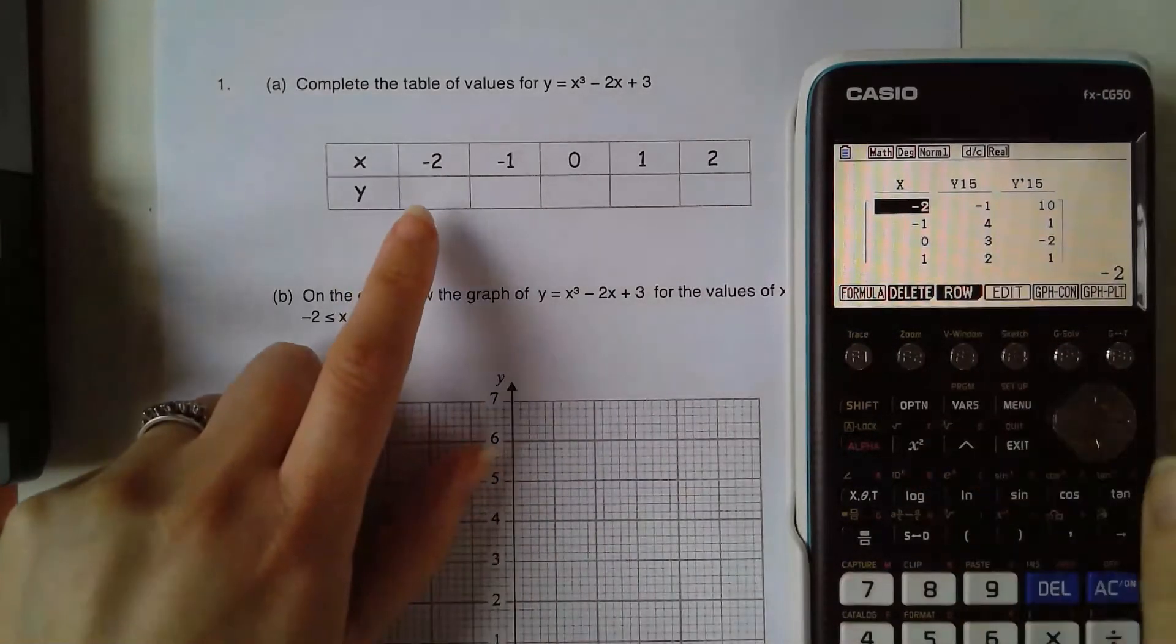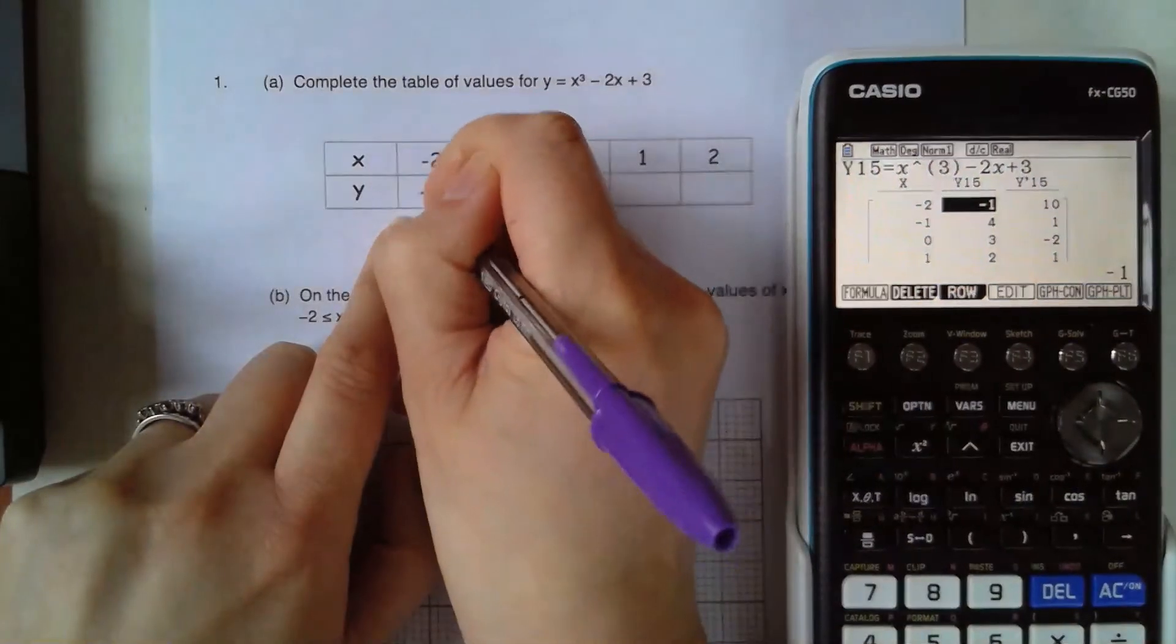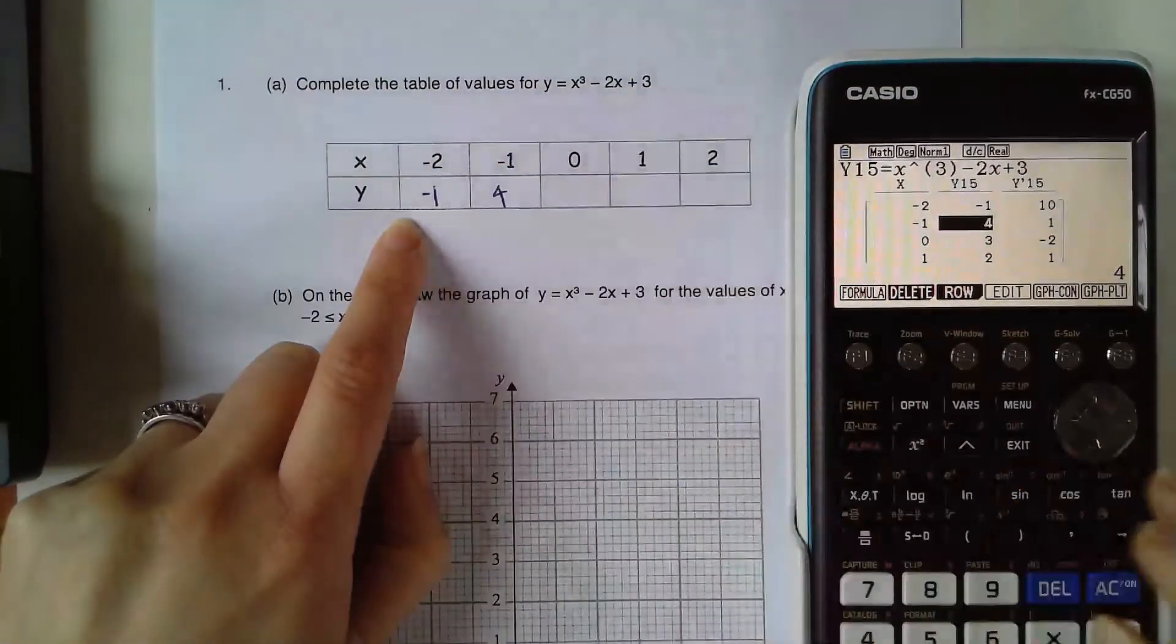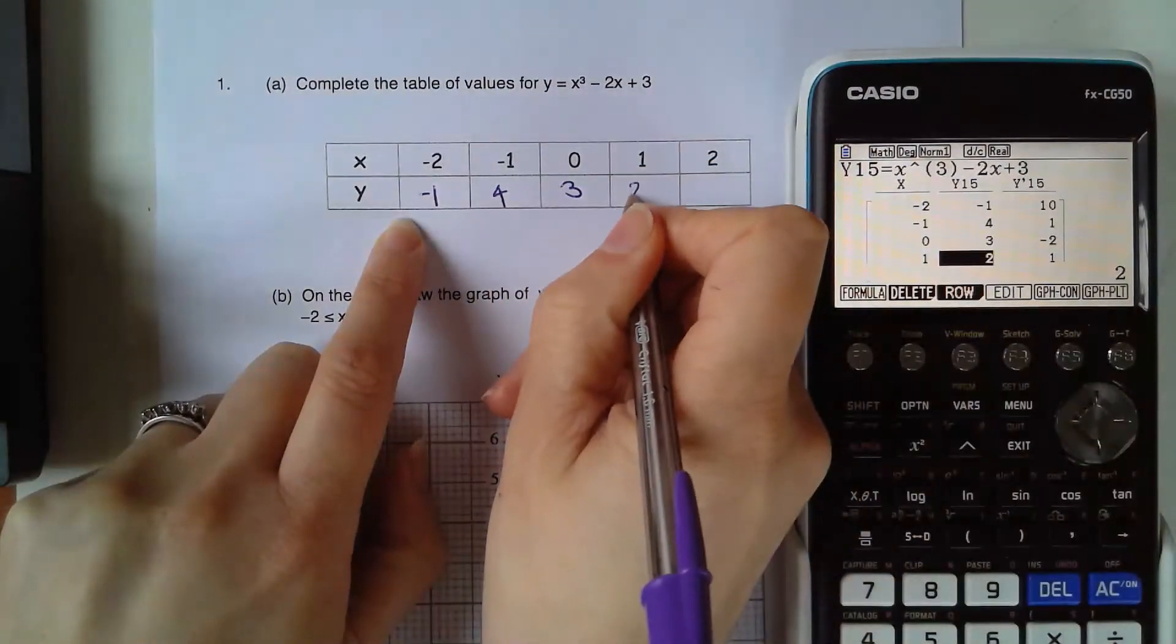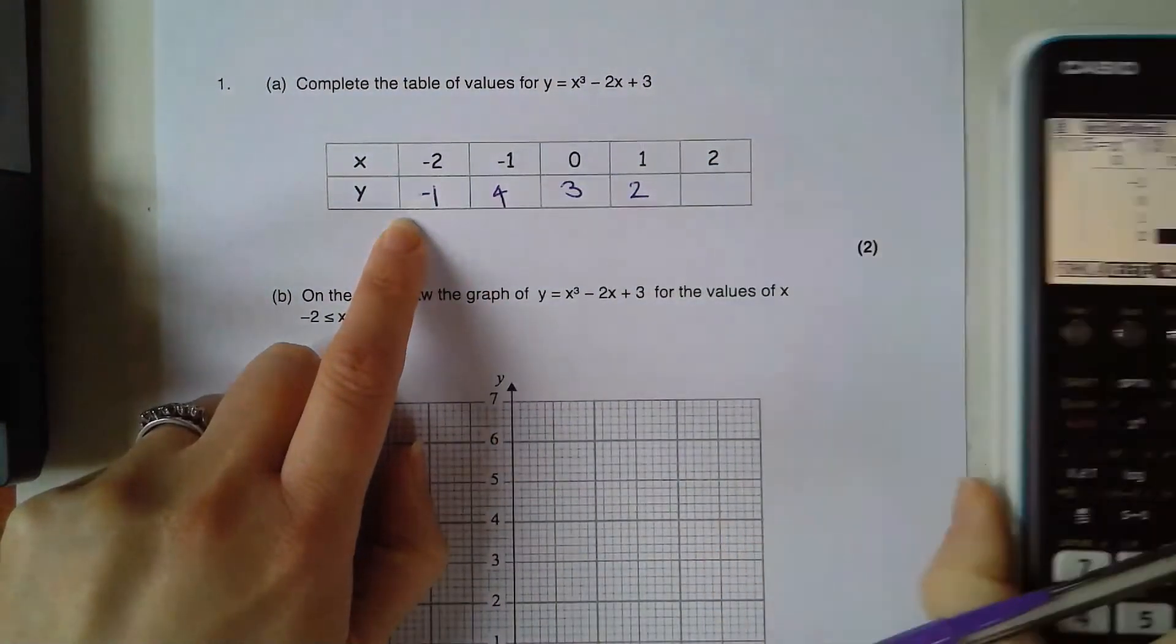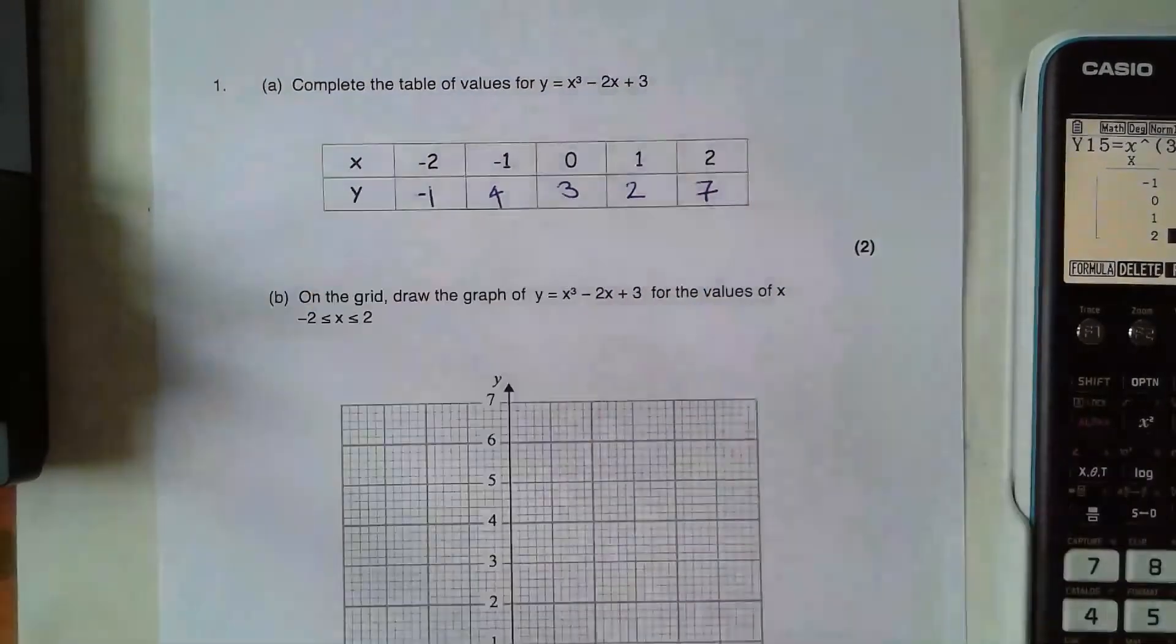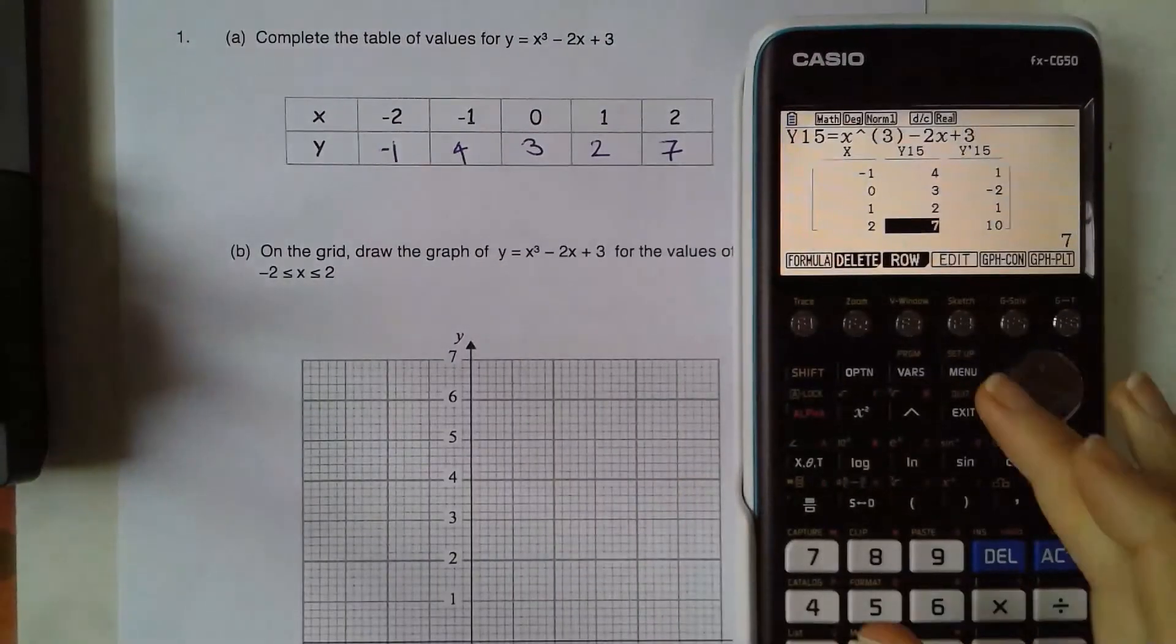So when x is negative 2, y is negative 1. Negative 1 is 4, 0 is 3, 1 is 2, 2 is 7. There we go. Now I just want to see what that's going to look like.